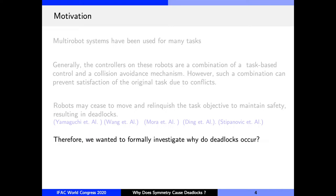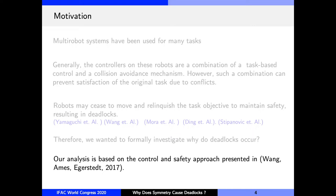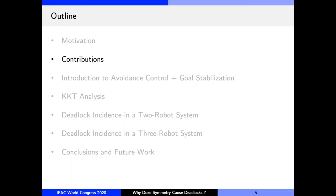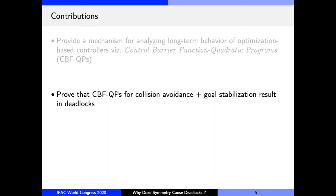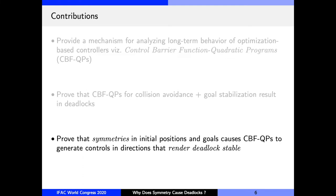I want to acknowledge that our analysis is based on the safe control algorithm developed by these authors. So the main contributions of our work are as follows. Firstly, we provide a mechanism to analyze long-term behavior of reactive optimization-based controllers. We focus on control barrier function-based quadratic programs, which have been very successful in ensuring safety for UAVs and legged robots. We demonstrate that when these controllers are used for collision avoidance and goal stabilization in multi-robot systems, they may cause deadlocks. Specifically, we show that it is the geometric symmetries in the initial positions and goals that cause CBFQPs to generate controls in directions that render deadlock stable, hence the title of the paper.